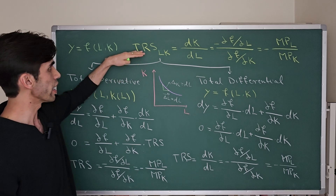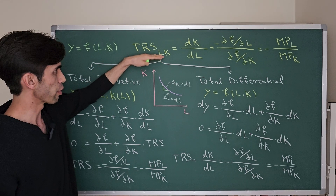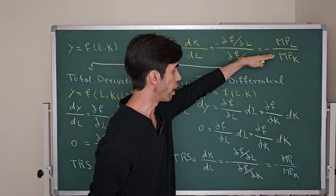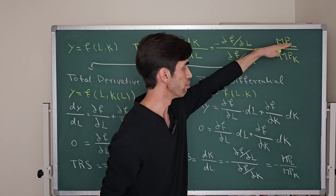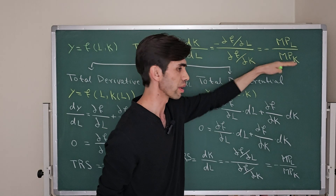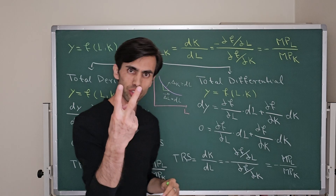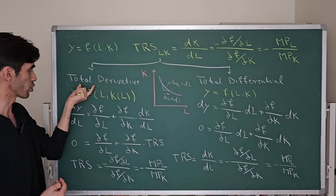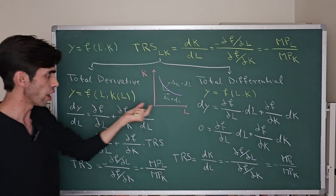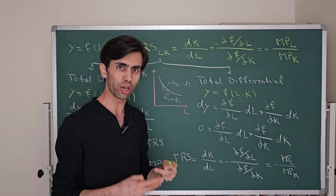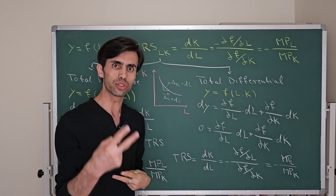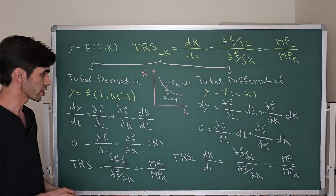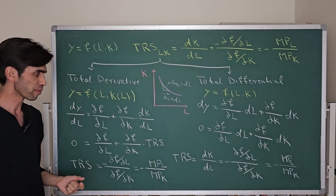While maintaining or staying on the same isoquant. So how can we derive it? Why is TRS of labor for capital equal to negative marginal productivity of labor over marginal productivity of capital? There are two ways — either we can find out total derivatives or total differentials — and both will give you exactly the same result.